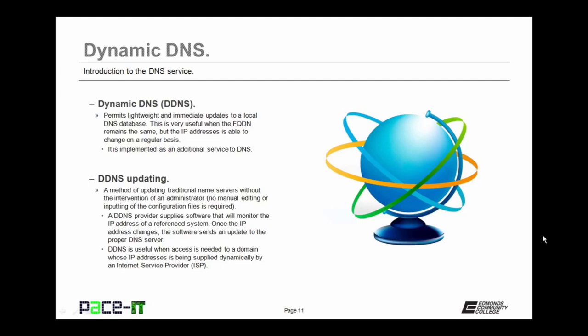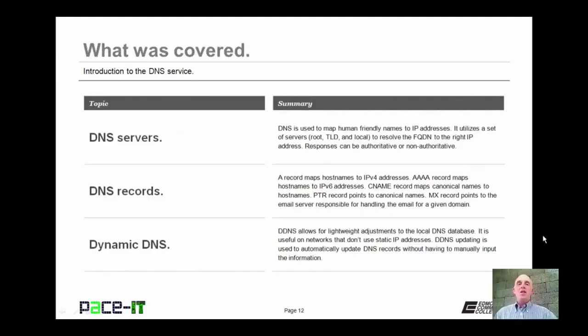A DDNS provider supplies software that will monitor the IP address of the referenced system. Once the IP address changes, the software sends an update to the proper DNS server. DDNS is useful for when access is needed to a domain whose IP address is being supplied dynamically by an ISP or internet service provider. That way the IP address can change, but people can still get to the service they're looking for.